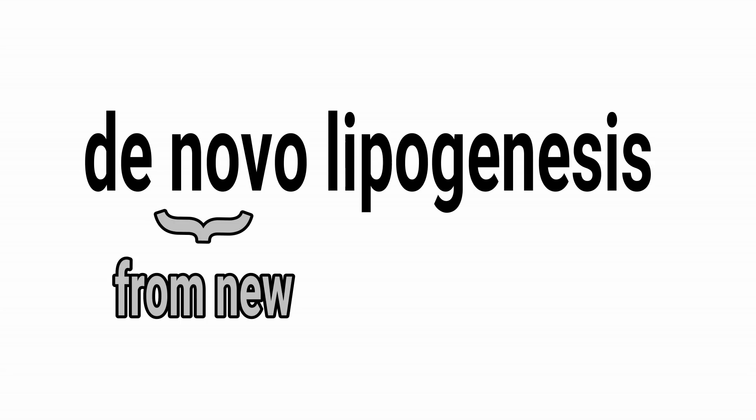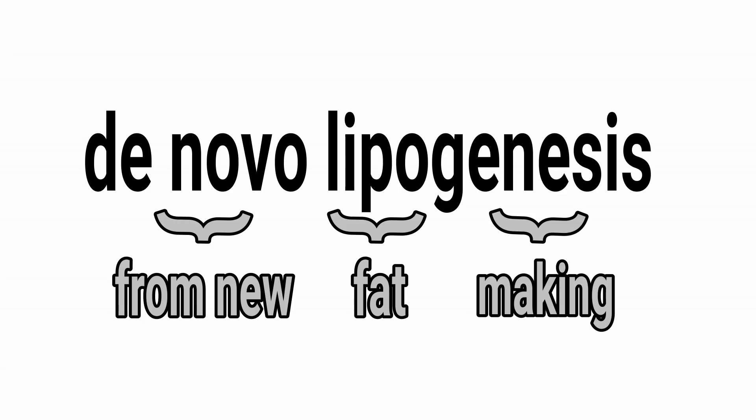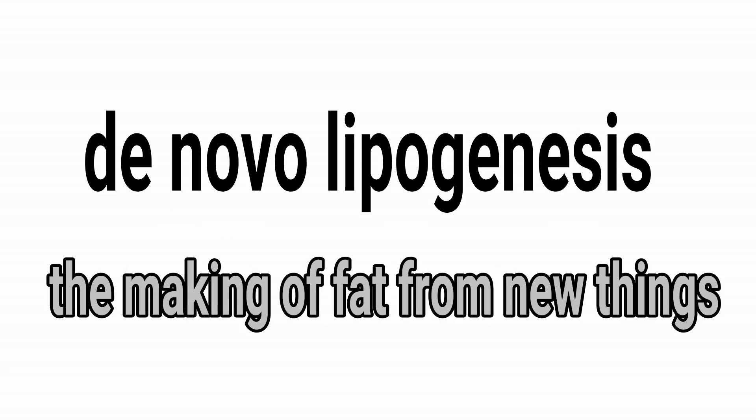So how does a fatty liver develop? A fatty liver results when your liver takes nutrients from your diet and makes fat through a process called de novo lipogenesis. De novo means 'from new,' the prefix lipo means fat, and genesis means beginning or making. So we are literally looking at the making of fat from new things — in other words, things other than the fat we eat.